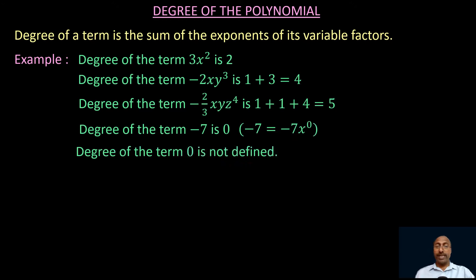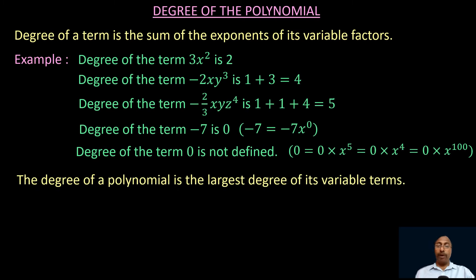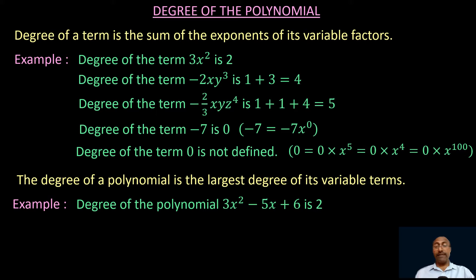The degree of the constant term minus 7 is 0, since minus 7 can be expressed as minus 7·x⁰. However, the degree of the term 0 is not defined, because 0 equals 0·x⁵ or 0·x⁴ or 0·x¹⁰⁰ — the power could be anything. The degree of a polynomial is the largest degree among its variable terms. For example, in 3x square minus 5x plus 6, the degrees of the terms are 2, 1, and 0, so the degree of the polynomial is 2.